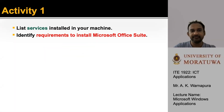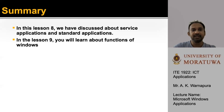Activity 1: List the services installed on your machine and identify the requirements to install Microsoft Office and Zoom. Summary of Lesson 8: We discussed service applications and standard applications. In Lesson 9, you will learn about the functions of Windows.